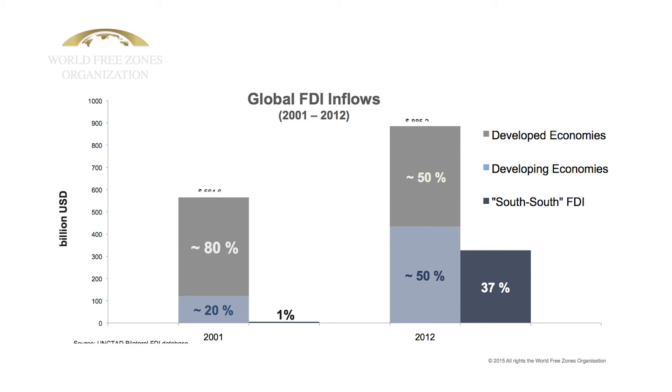A similar picture is global FDI, which has also had profound structural changes. If you look at the early 2000s and back to the 1990s, most global FDI inflows went to advanced economies — about 80% — with only 20% to developing economies. Today it's 50-50. This is a big change in terms of who is receiving FDI around the world. Very similarly to what's happening in trade, more and more of this FDI is south-south FDI, taking place between emerging and developing economies.